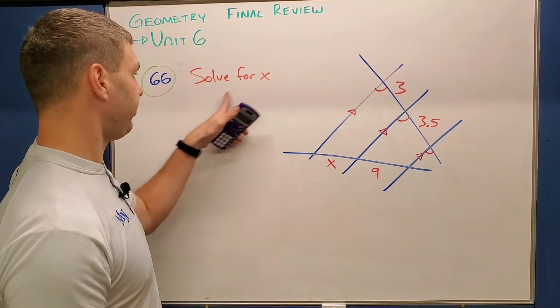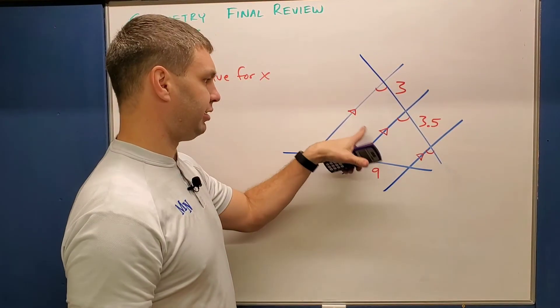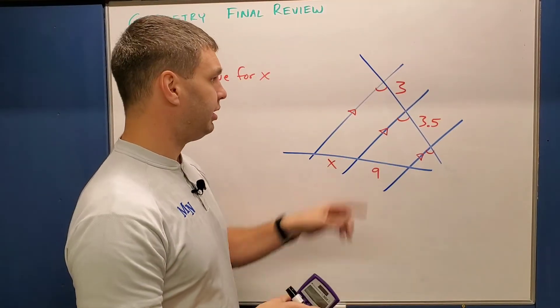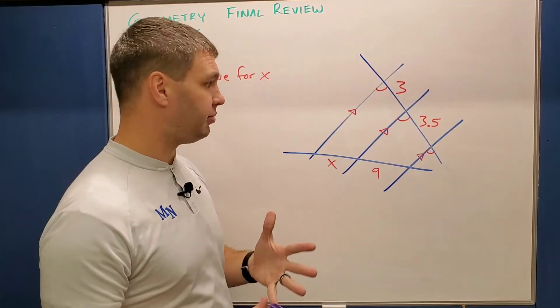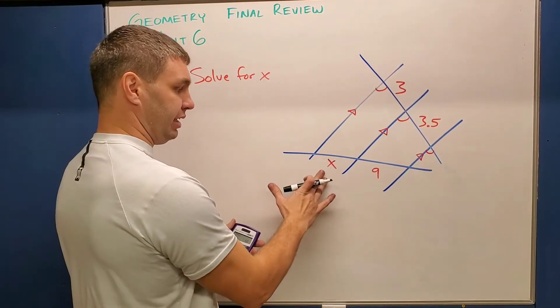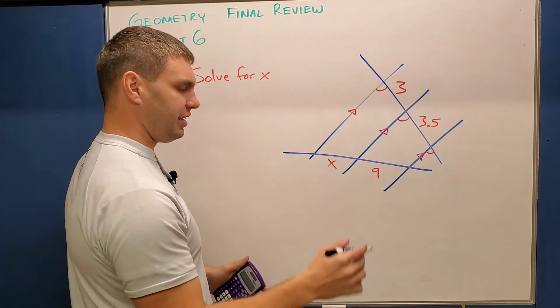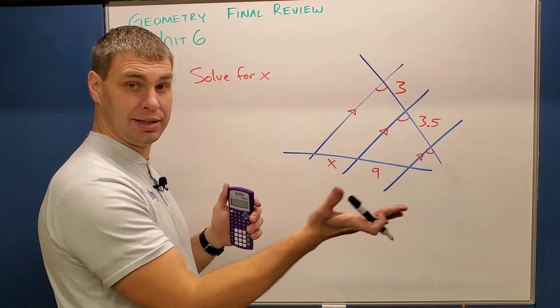Last problem for this video. It's asking us to solve for x given these kind of three parallel lines. If those triangles weren't there, we could still know they're parallel because these are all going to be corresponding angles, which makes those lines parallel to each other. But in either case, we need to find x.